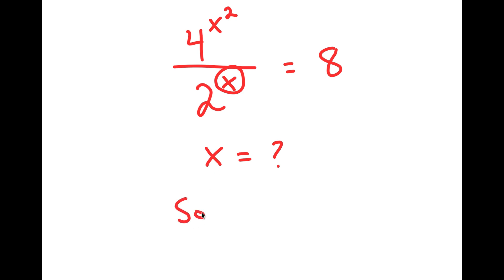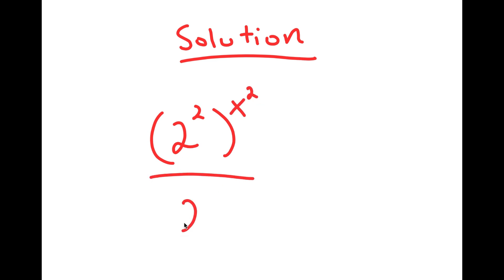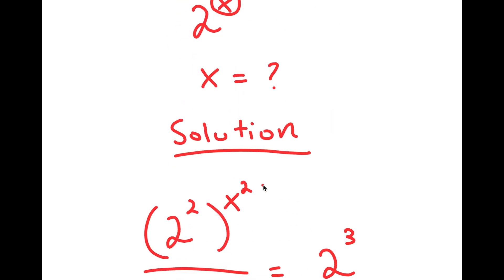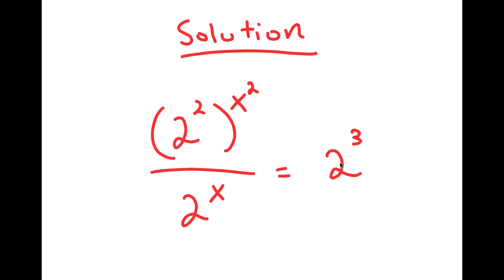For my solution, I'm going to first start by rewriting this as 2 squared to the power of x squared over 2 to the power of x is equal to 2 to the power of 3. What I did was rewrite all the terms in bases of 2. So 4 is the same thing as 2 squared, 2 to the power of x already has a base of 2, and 8 is the same thing as 2 to the power of 3.